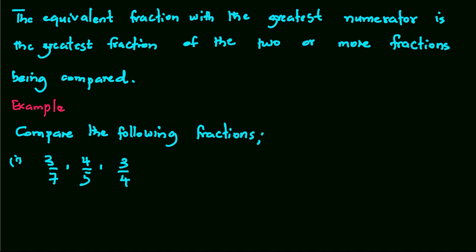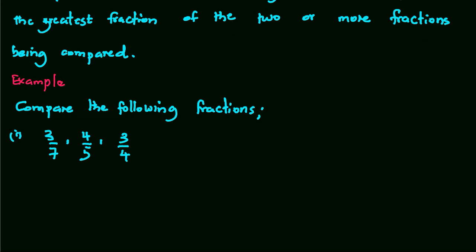So let's look at another example. We are comparing 3 over 7, 4 over 5, and 3 over 4. The LCM of 7, 5, and 4 is 140.